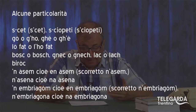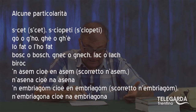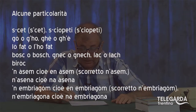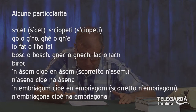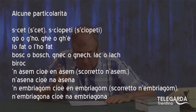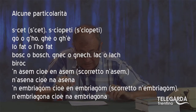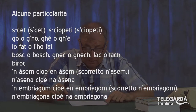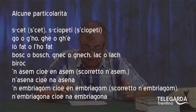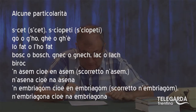Poi ci sono le particolarità. Ve ne dico solo alcune: scèt — se non separo la S dalla C con la linetta o con l'apostrofo, uno che non conosce il dialetto legge 'scet'. La stessa cosa per s-ciòpeti: i s-ciòpeti sarebbero la varicella. Se non si separa, uno legge 'sciòpeti'. Per far sì che si legga staccato si mette la linetta o l'apostrofo.